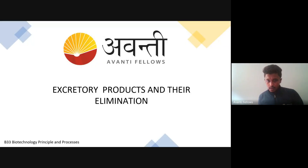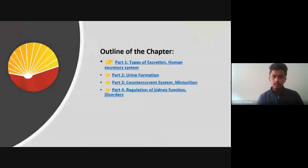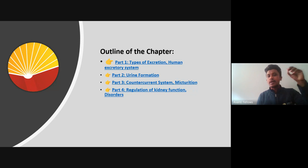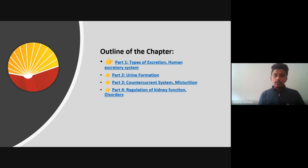To start the topic — excretory products and elimination — why is excretion even necessary? As a biological organism, we obtain several different materials from outside in the form of food or in the form of gases like oxygen for running our body.